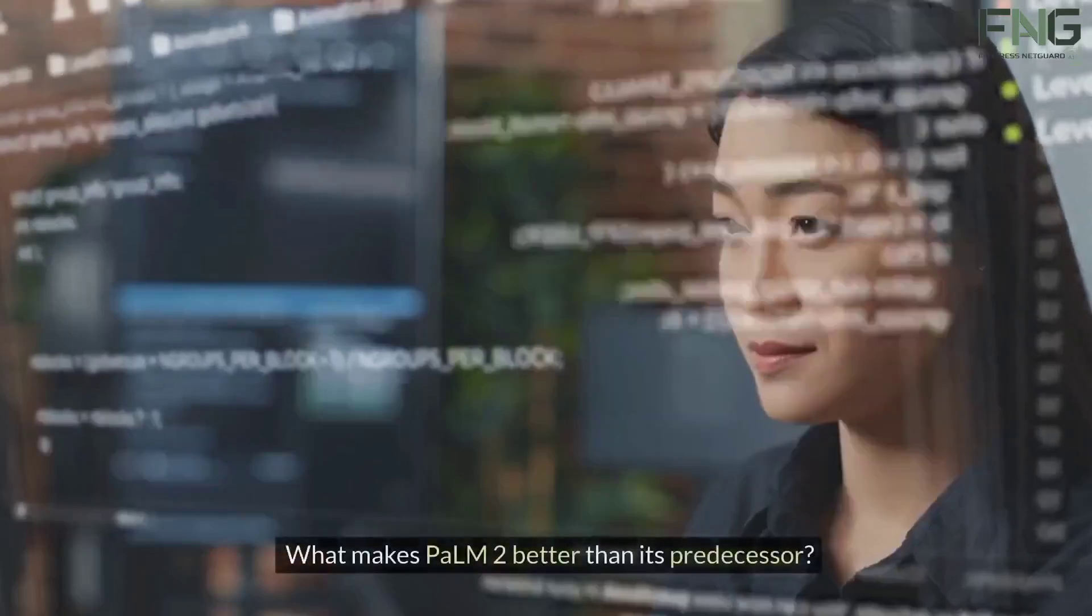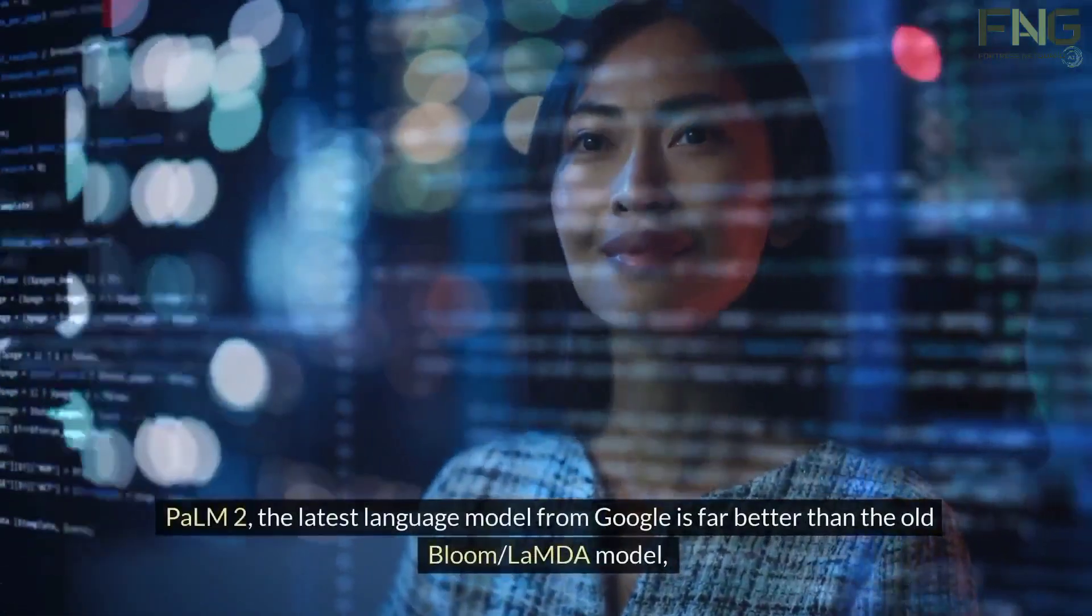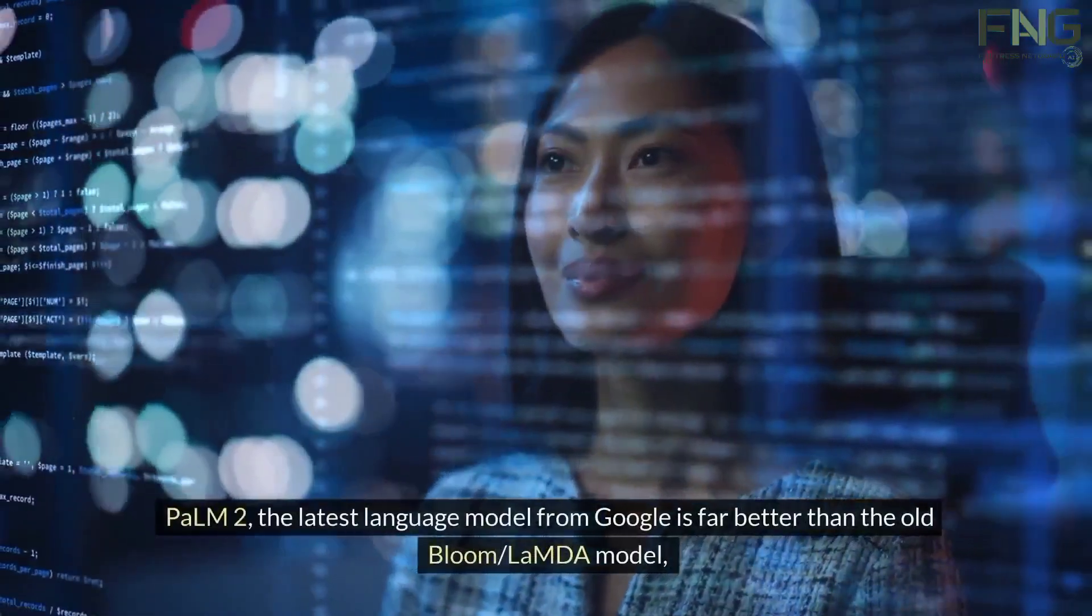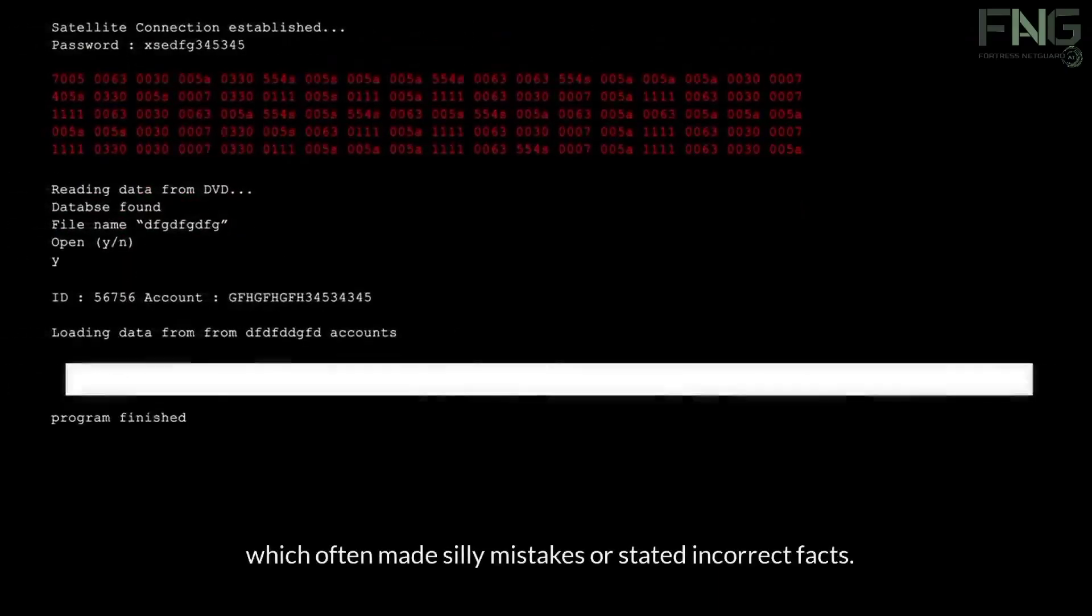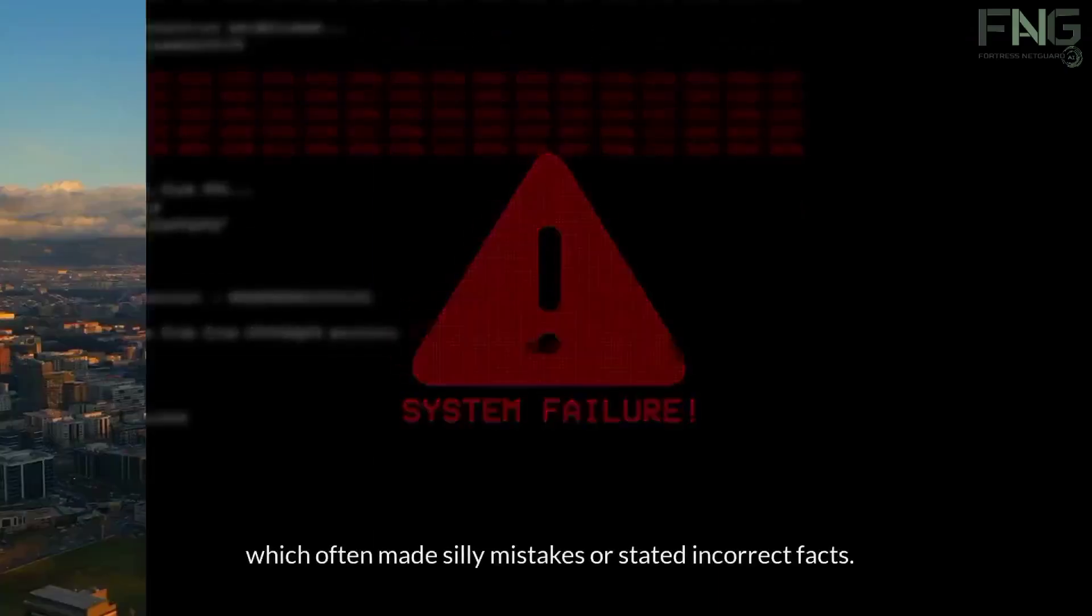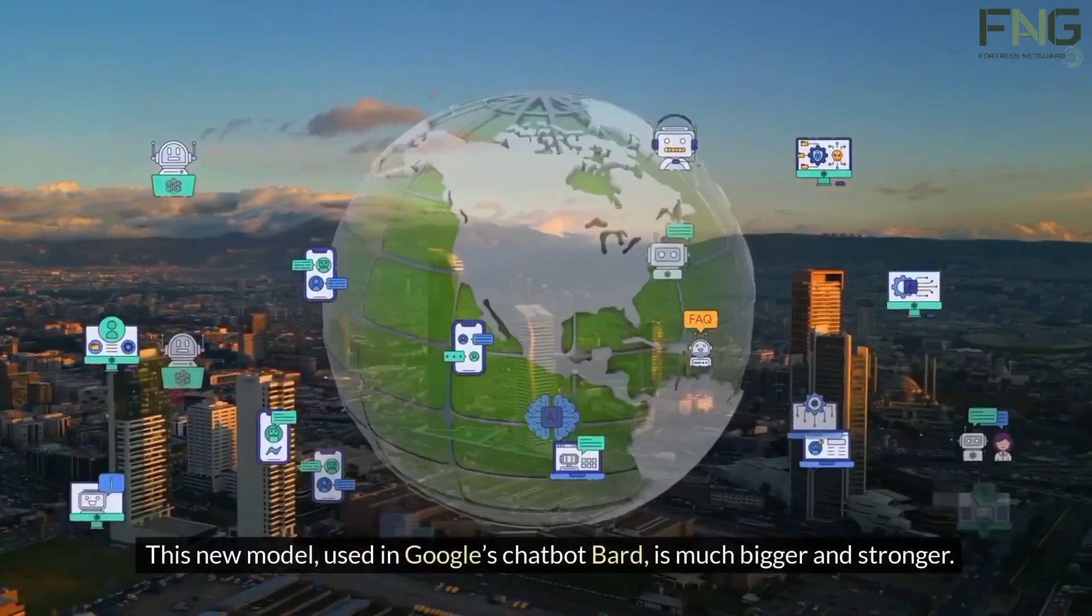What makes Palm 2 better than its predecessor? Palm 2, the latest language model from Google, is far better than the old Bloom/Lambda model, which often made silly mistakes or stated incorrect facts. This new model, used in Google's chatbot BARD, is much bigger and stronger.